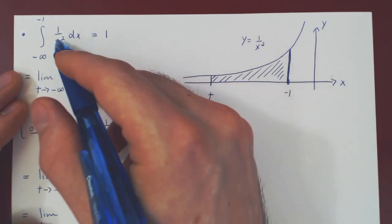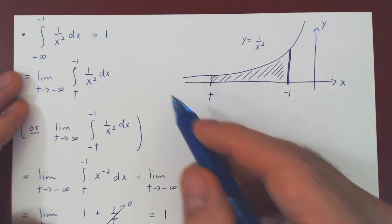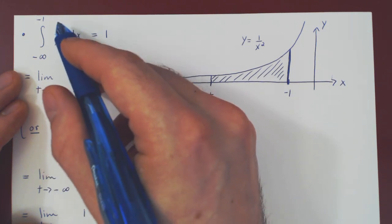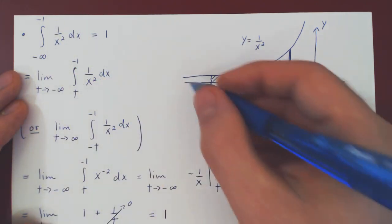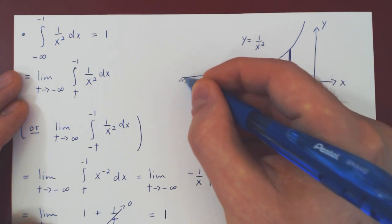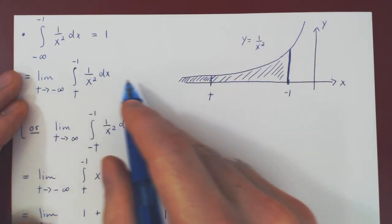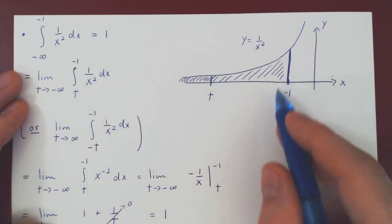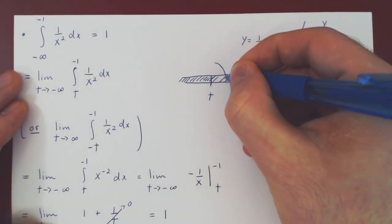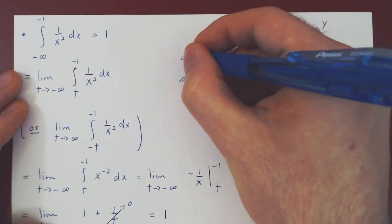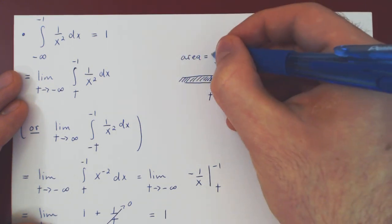The geometric interpretation says: if you look at the area below this curve, all the way from negative infinity up to negative 1 — an infinitely long region — the exact area of this infinitely long region happens to be exactly equal to 1.